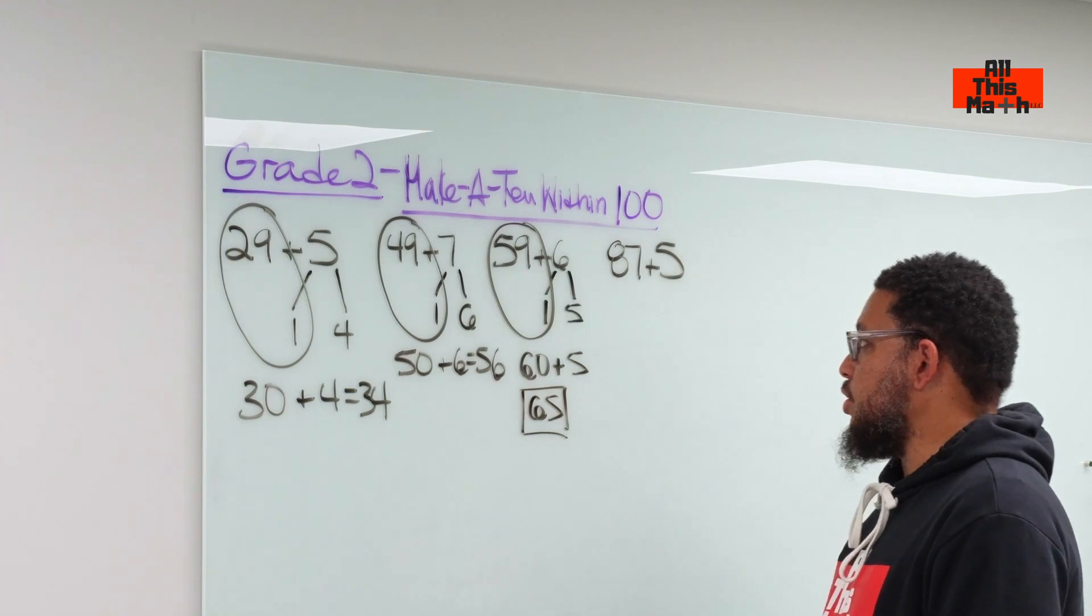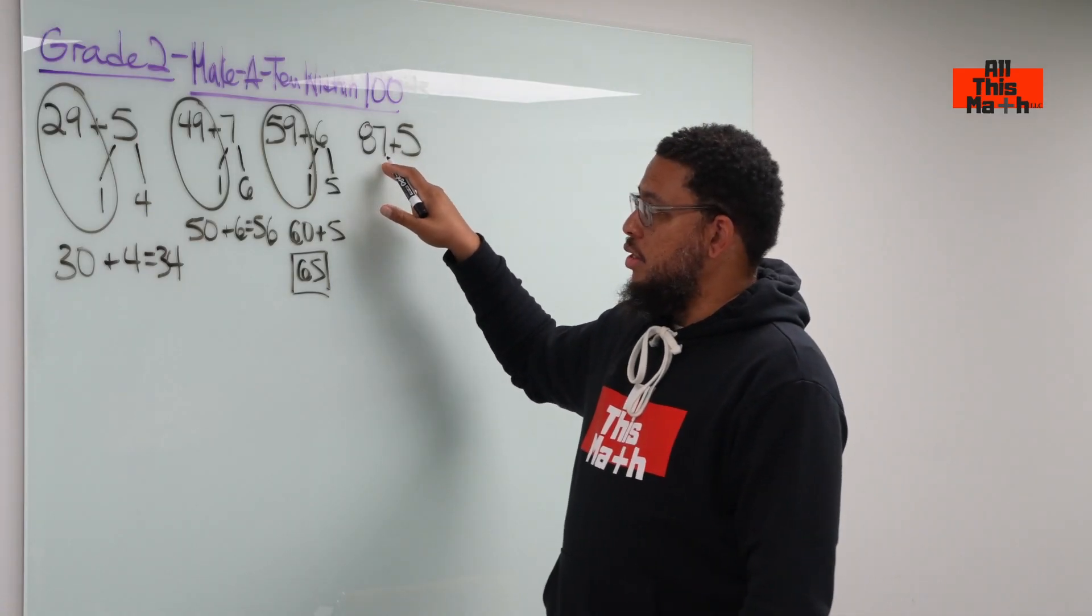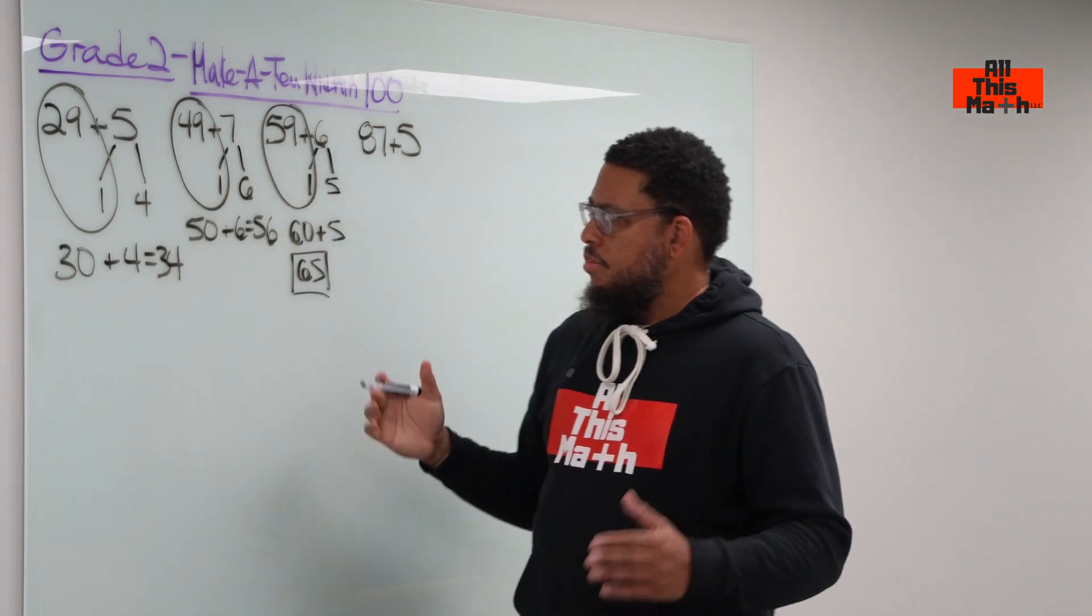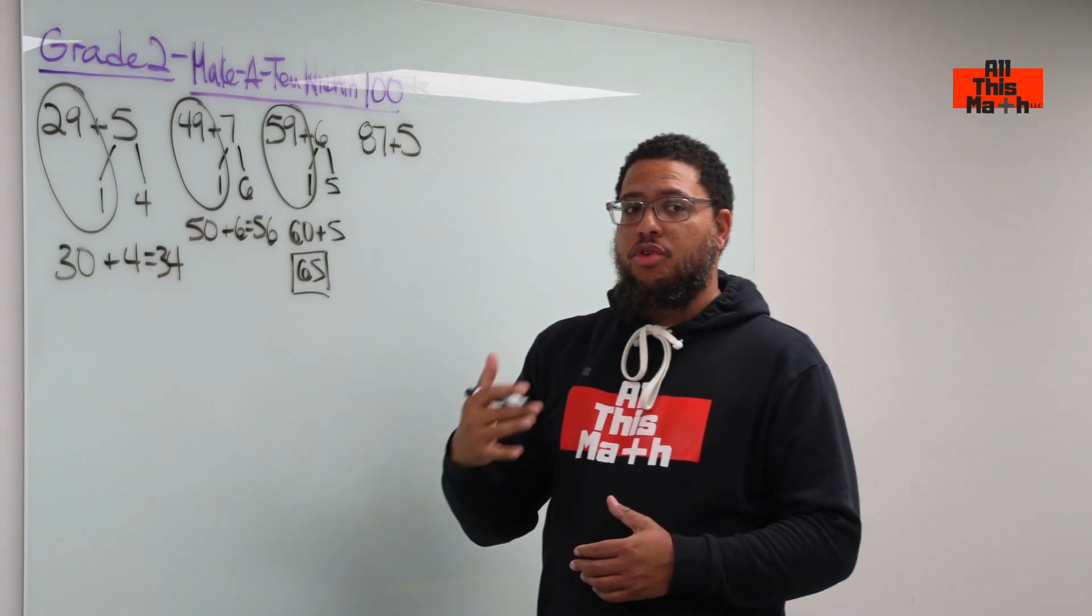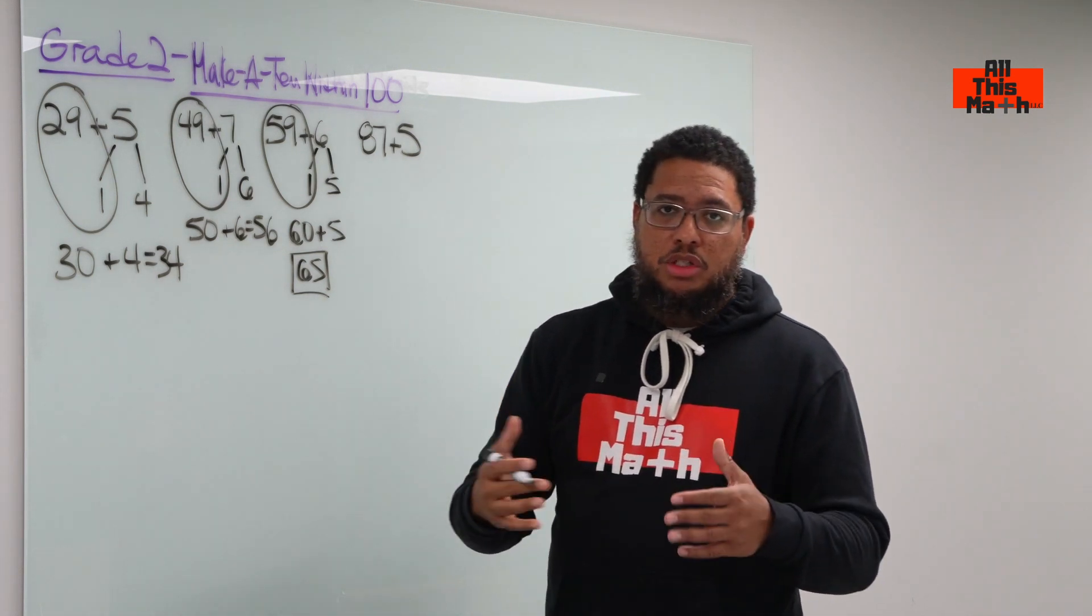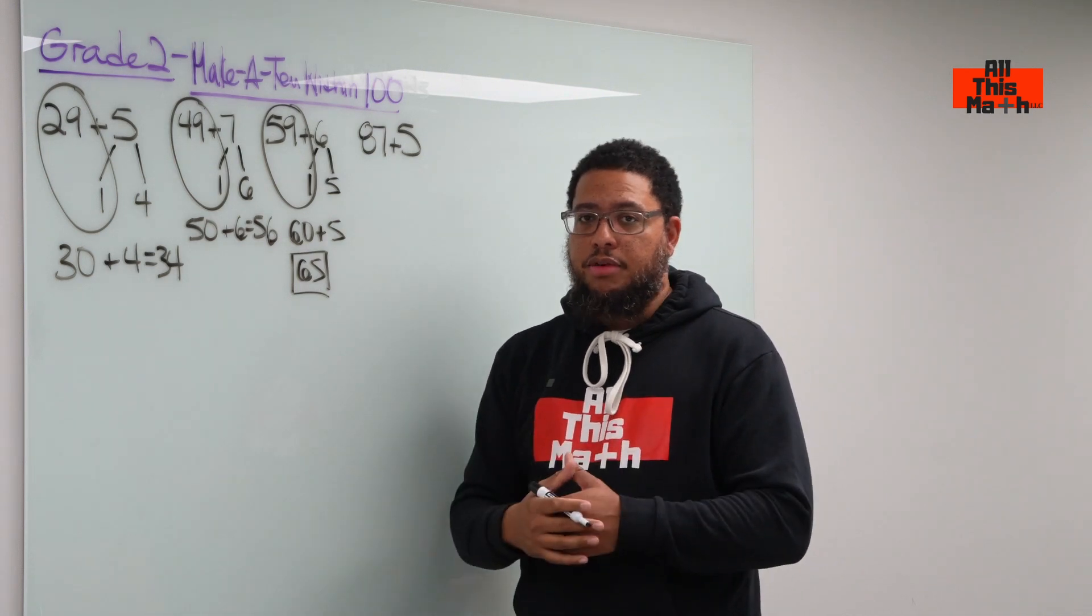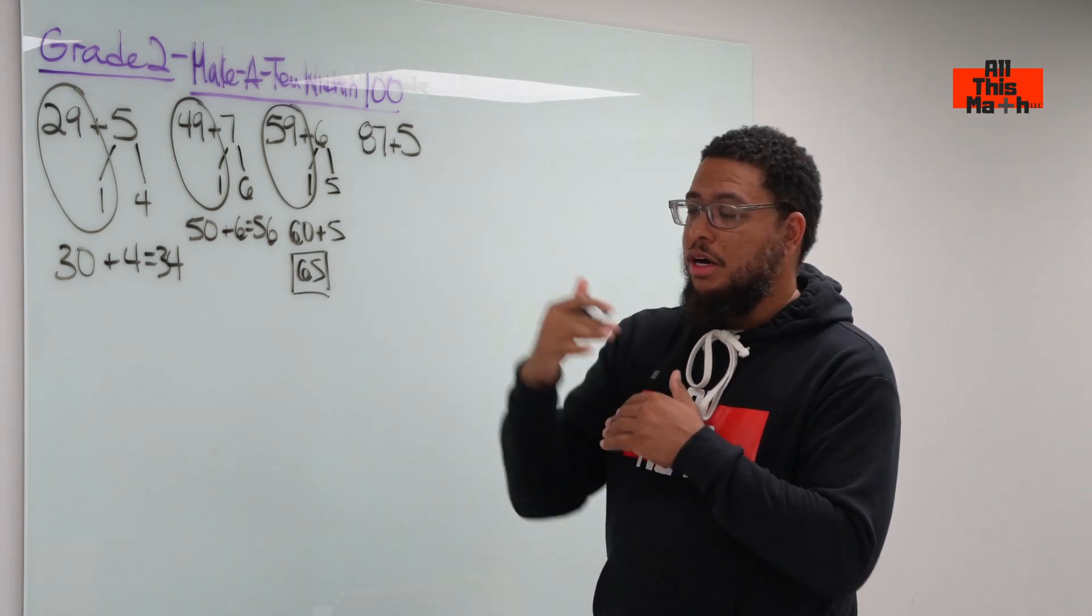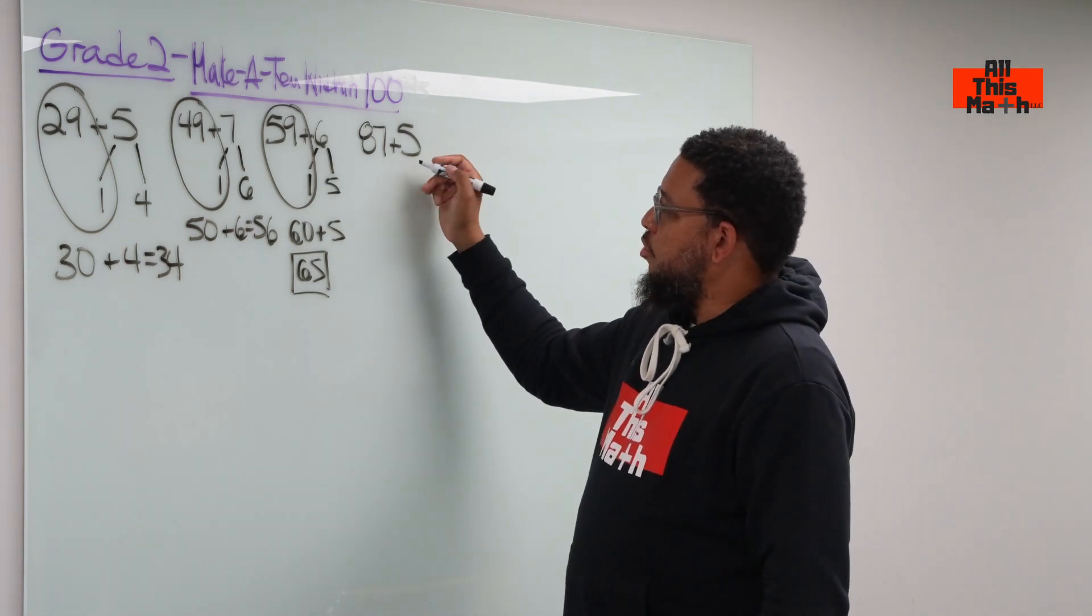Last but not least, we got 87 plus 5. Notice that the 1's place digit is different now. Now we have a 7 in the 1's place, whereas in the previous three examples, we had 9's in the 1's place. Not a big deal, though. We just need to know that you need to add 3 to 87 to create a multiple of 10, which would be 90. That's the closest multiple of 10 to 87. You're trying to make a 10 and get to a 10 or a multiple of 10. So where am I going to get the 3 from? I'm going to get it from the 5.